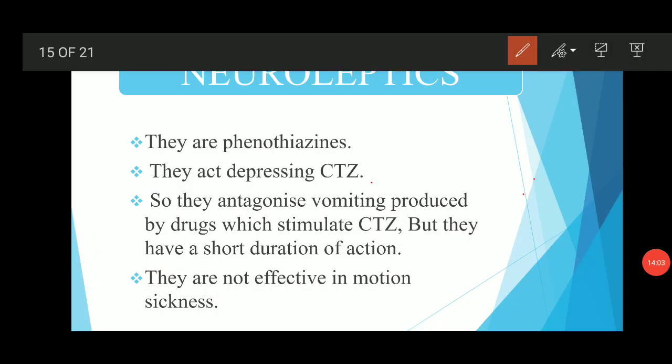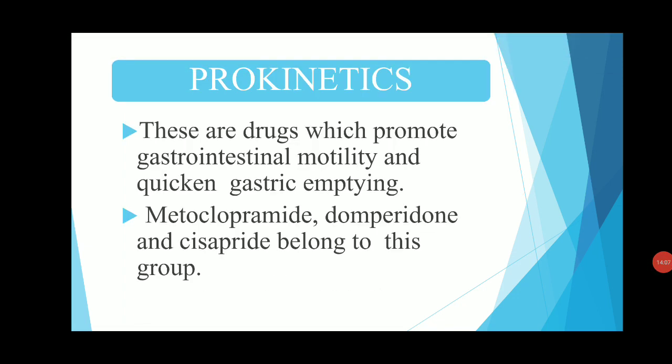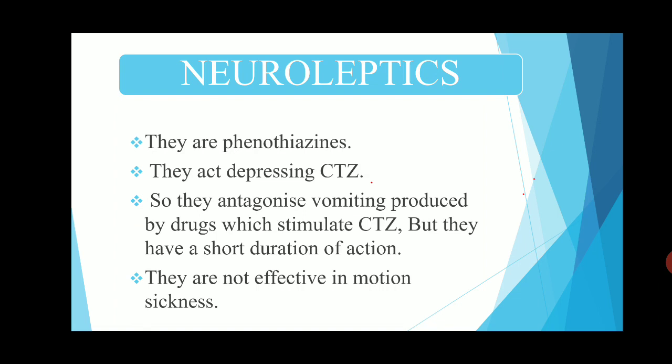The next class is neuroleptics. Neuroleptics are drugs of the phenothiazine category. They act by depressing the CTZ — the Chemoreceptor Trigger Zone — and they antagonize the vomiting produced by drugs which stimulate the CTZ. However, they have a short duration of action and are not effective in motion sickness. Example: chlorpromazine.